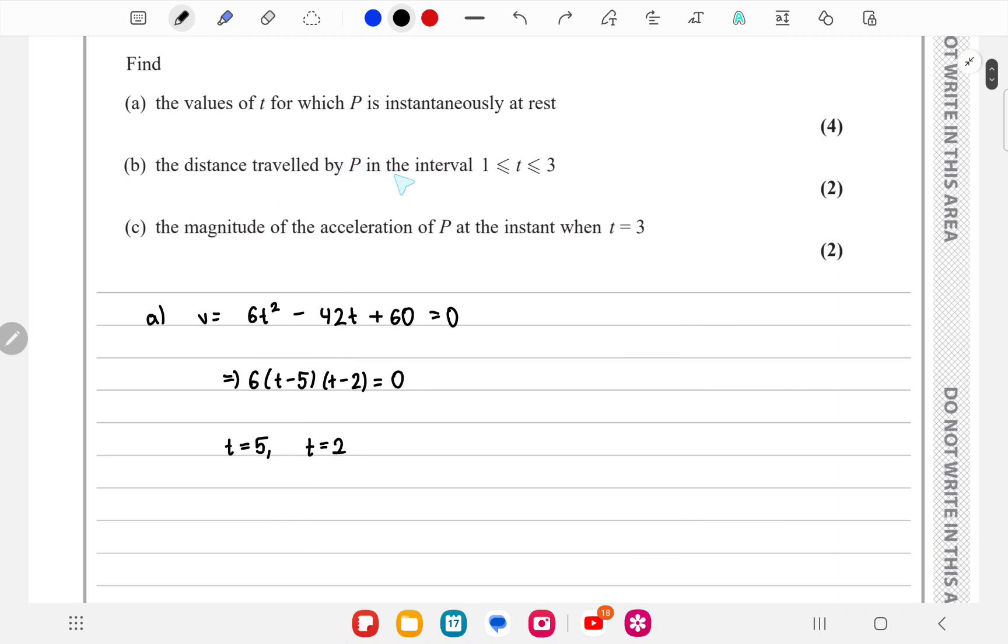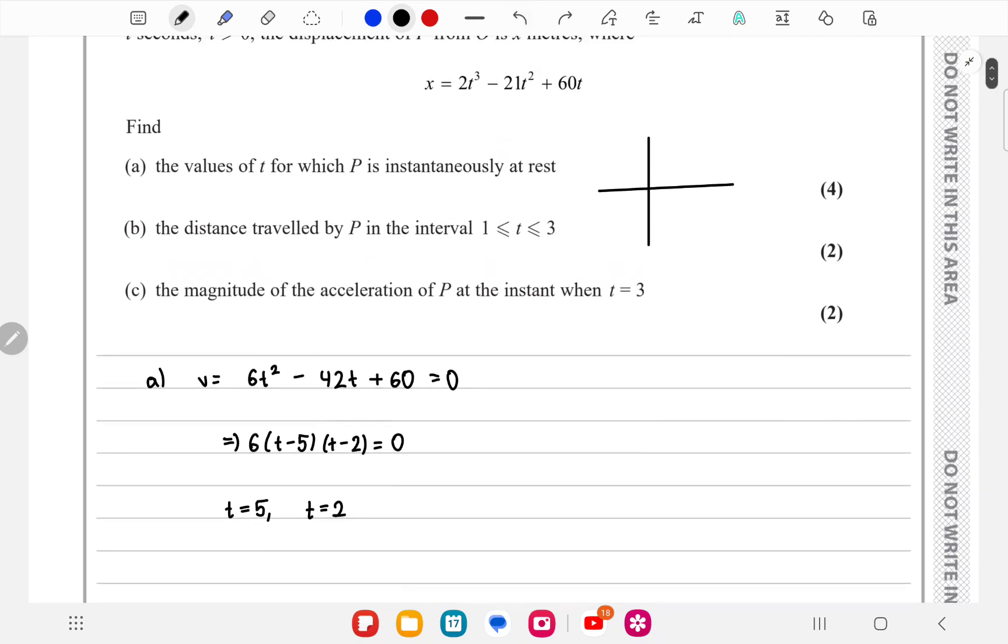In part b we have to find the distance traveled in the interval 1 to 3. We cannot just directly subtract f of 3 from f of 1 because the v-t graph, the velocity graph, will have a root at 5 and 2, something like this. If we want the area from 3 to 1, some of it will be positive and some of it will be negative.